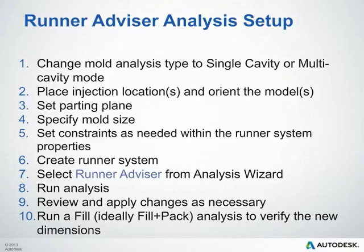Next, you'll place your injection cones and orient the model. Set your parting plane. Specify your mold size. Set constraints as needed within the runner system properties. Create your runner system. Select the runner advisor analysis sequence from the wizard. Run the analysis. Review and apply any changes as necessary. Then, of course, we're going to run a fill analysis, at least, to verify the new runner dimensions that we've obtained.